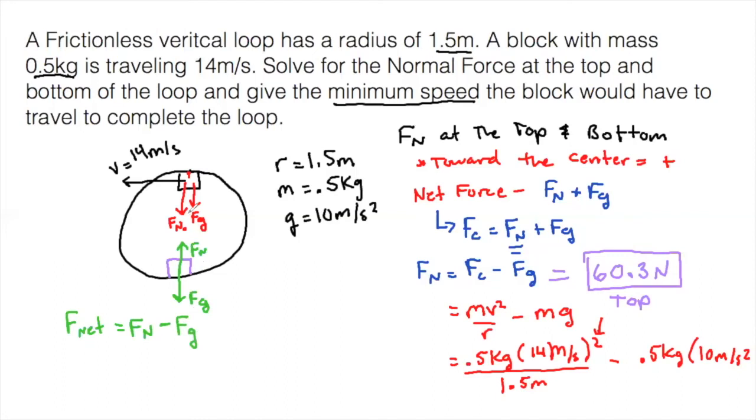So a common error would be to say, we made FN and FG, we made those positive, therefore this FG has to be positive. Not the case. Remember, super important. Toward the center. And the fancy F net that we have for a circle is equal to FC. Therefore, FN is going to be equal to FC plus FG.